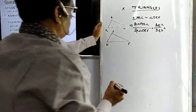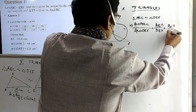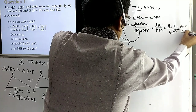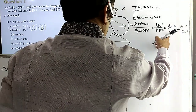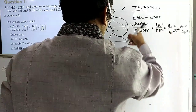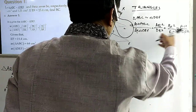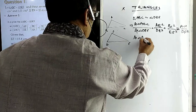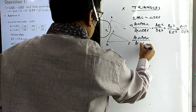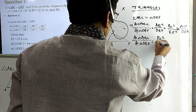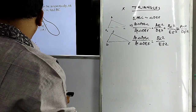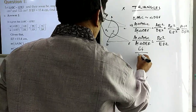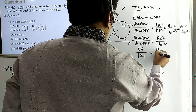This implies: area of triangle ABC by area of triangle DEF equals BC squared by EF squared, and that also equals AC squared by DF squared. Now EF is given, BC is required, and the two areas are given. So we use: area of triangle ABC by area of triangle DEF equals BC squared by EF squared, and put in the respective values. Area of triangle ABC equals 64 square centimeters, area of triangle DEF equals 121 square centimeters.